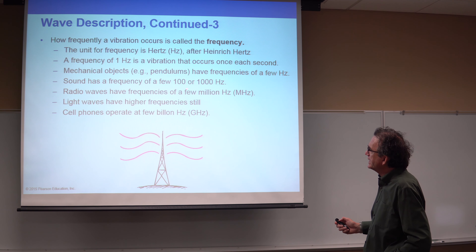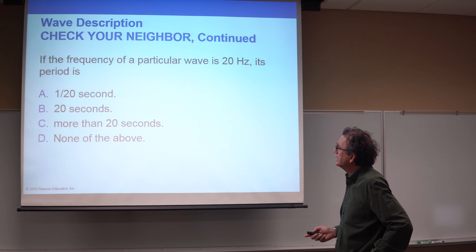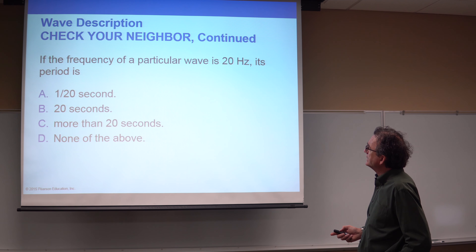For example, a pendulum that makes two complete oscillations — left to right and back — in one second has a frequency of two hertz. The period must then be one-half of a second, meaning it takes half a second for the pendulum to complete one full swing from left to right and back. This is a straightforward formula to apply. The slides are available for you to review during your study time.